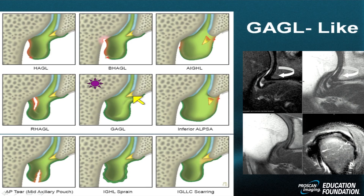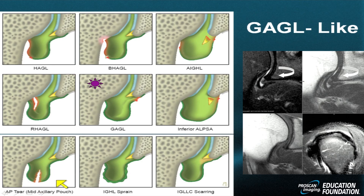Then we have the inferior ALPSA — the anterior labral ligamentous periosteal sleeve avulsion — where the labrum comes off, medializes, and slides underneath the stripped periosteum. Then some simpler injuries: a direct vertical tear through the inferior capsule, or a sprain where things stretch out. They may thicken, and may even thicken and contract to produce scar tissue and create a pseudo-mass.